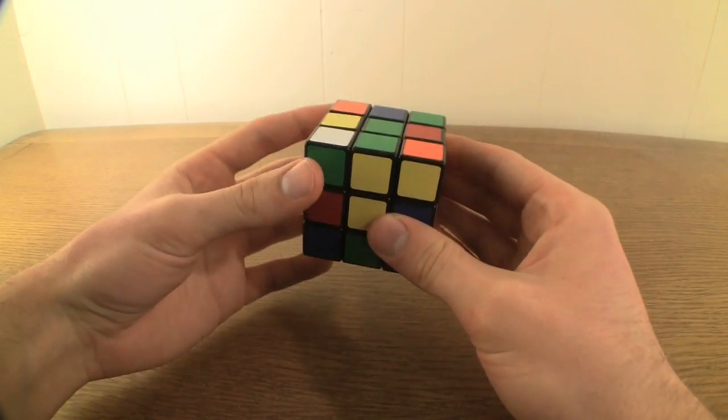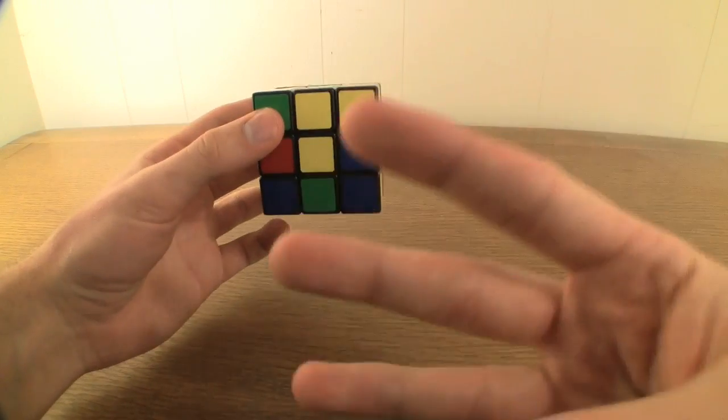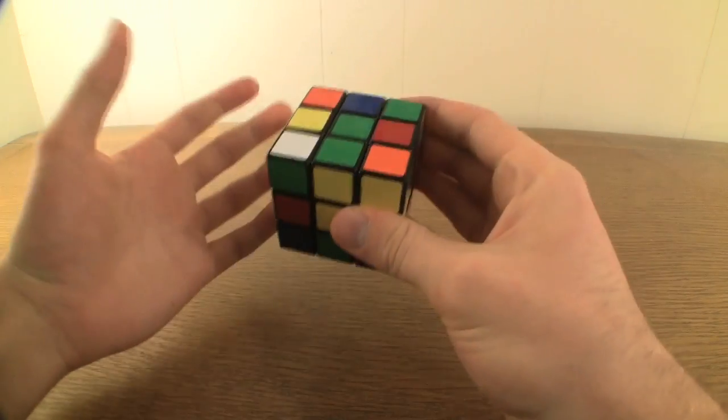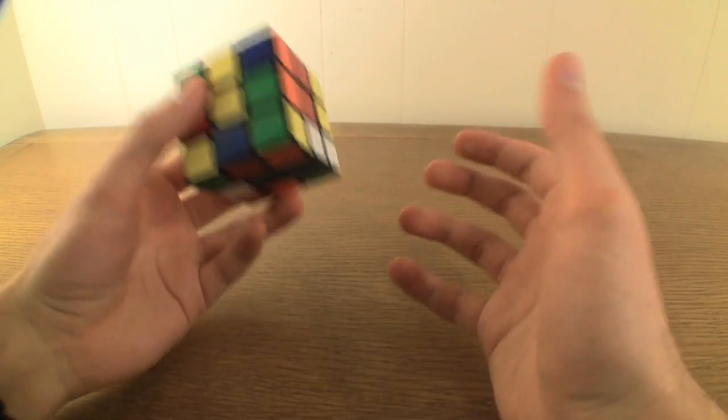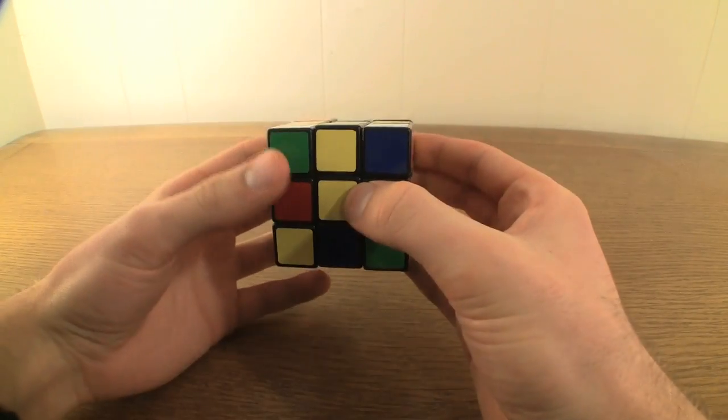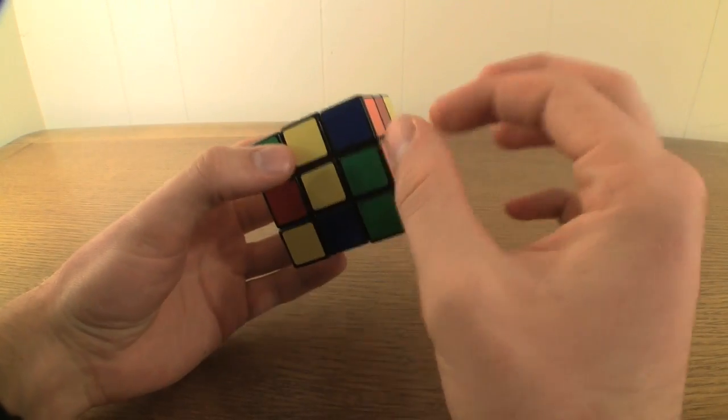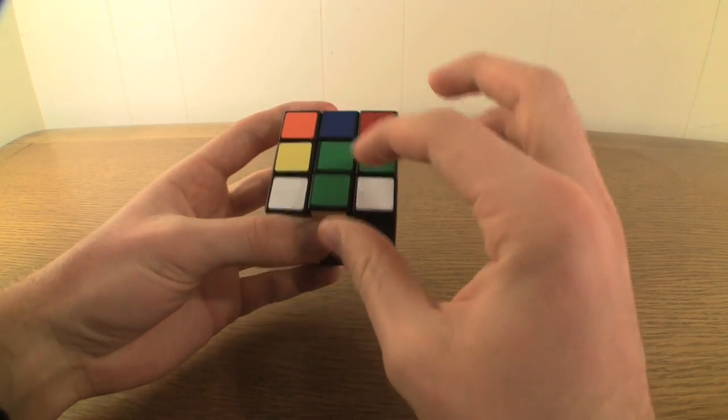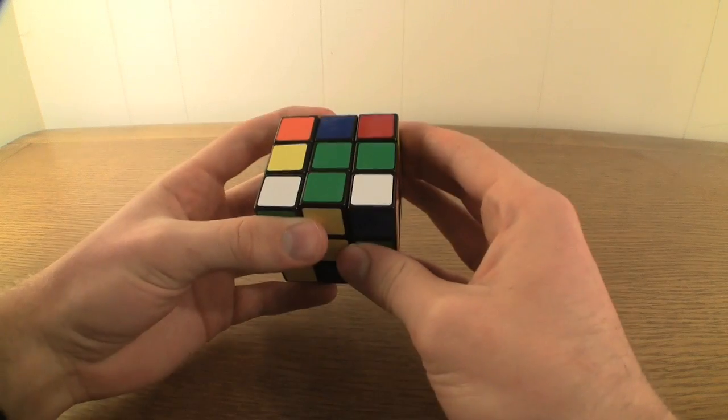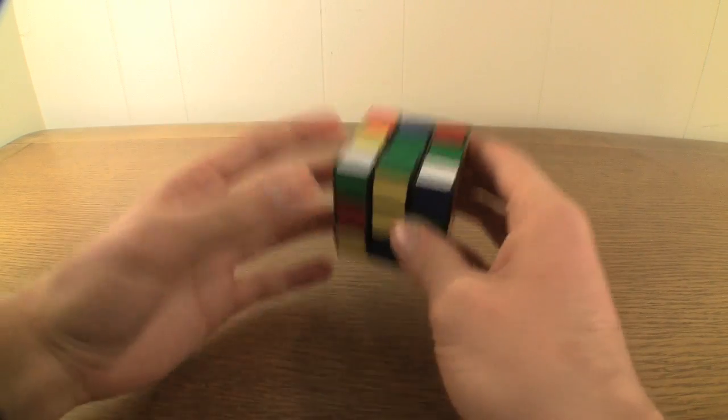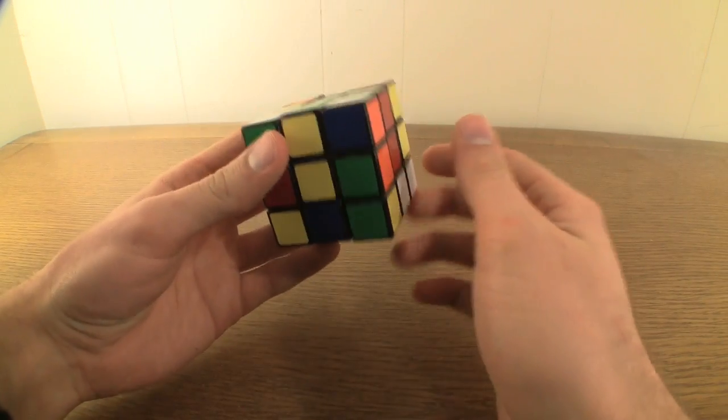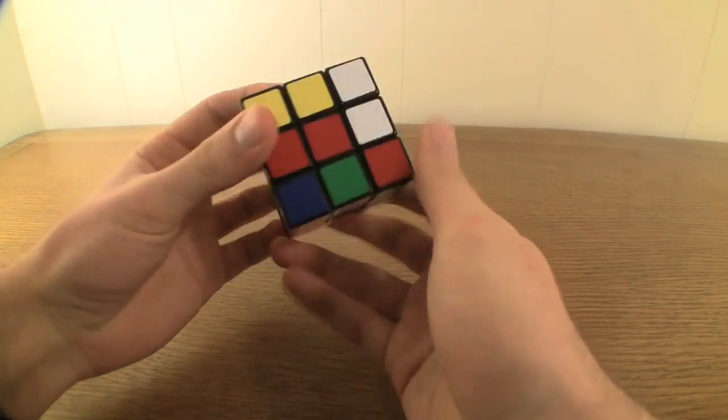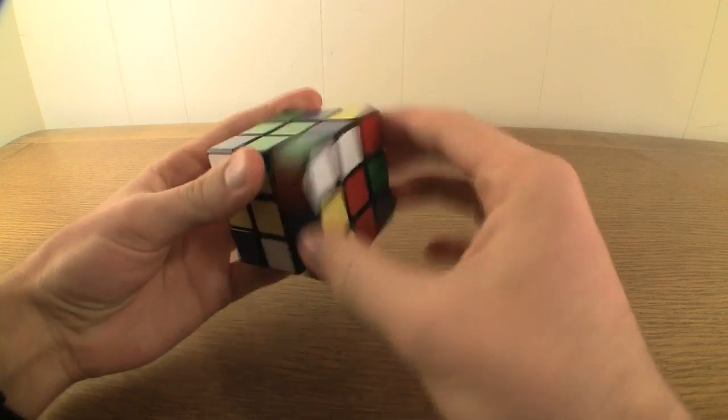To complete the green cross, you simply need to repeat this process three more times with the other three green edges, being careful not to mess up what you've already done. It's fairly intuitive, but for the sake of being thorough, if you ever run into a situation where to move an edge piece into the down face would require displacing an already solved portion of the green cross, do it anyway. You'll find that the situation tends to sort itself out quite nicely.